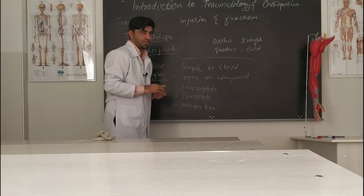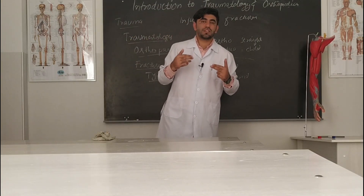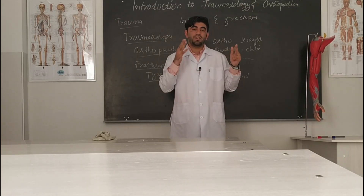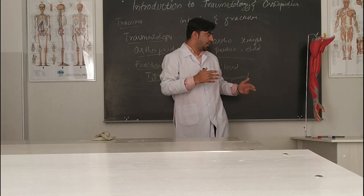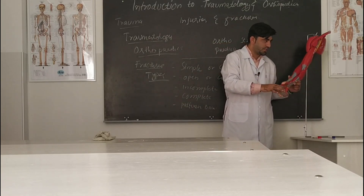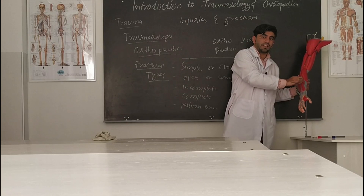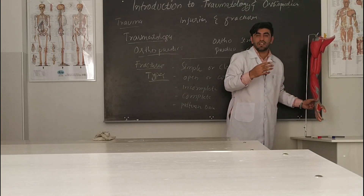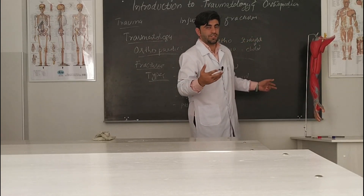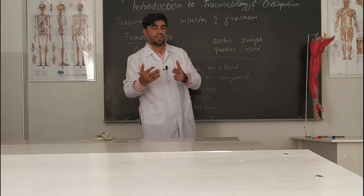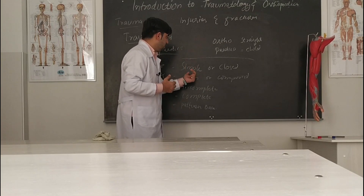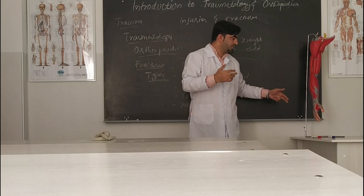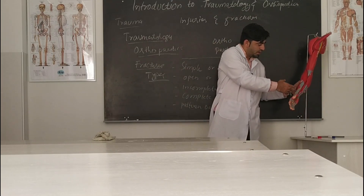The first type is a simple or closed fracture. A simple or closed fracture means there is a fracture or injury but it is not visible or felt externally. For example, the hand may have a fracture but the external skin shows no injury, no wound. So the bone is injured but we cannot see it externally — this is a simple or closed fracture.